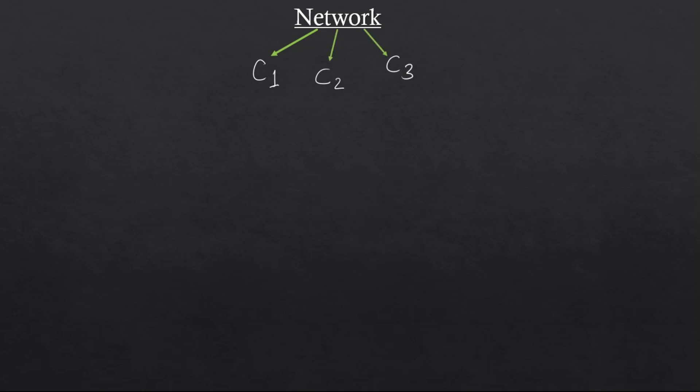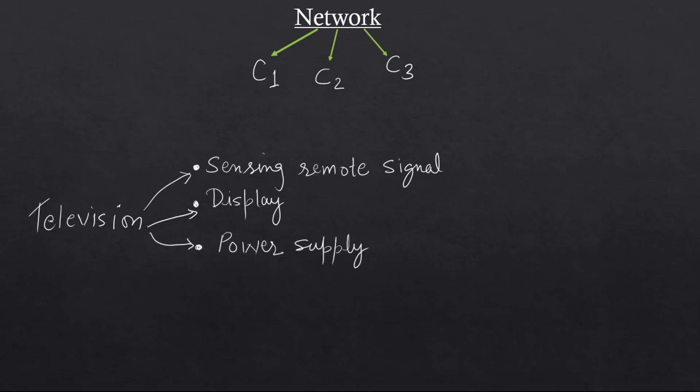An example of this we can take from any electrical device. Let us take an example of television. In this, there will be multiple circuits like sensing the remote signal. There will be a circuit to control a display. Then there will be a circuit which will be related to power supply. Then there will be a circuit which will be connected to a D2H. This way there will be multiple circuits.